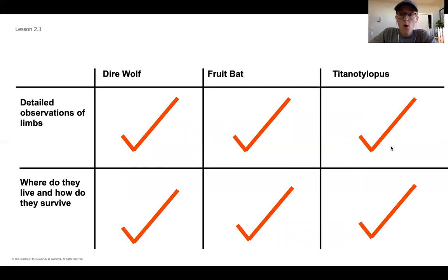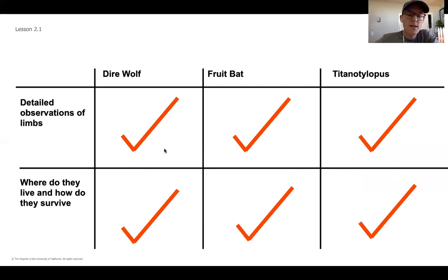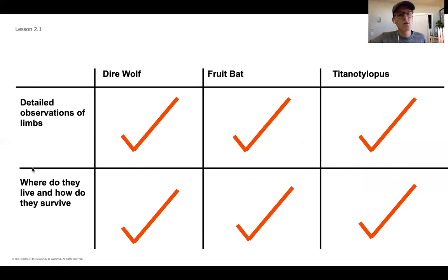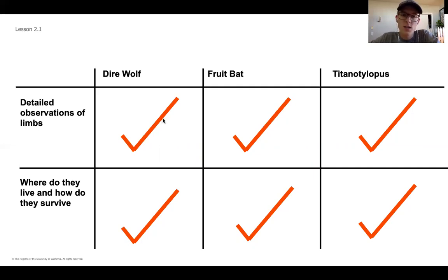Hopefully at this point you have filled in all six places in your T-chart. If you didn't, I really encourage you to go back in the video and make sure you've recorded your observations — what you saw — and what you read about how those individual animals survive. This video is going to wrap up here, but go back and look at which ones you may have missed. We'll continue with the second video for the second half of this lesson.